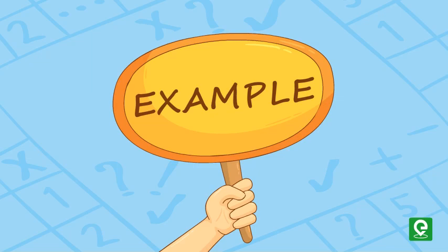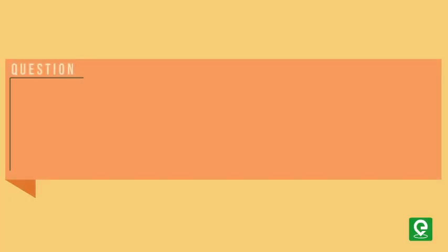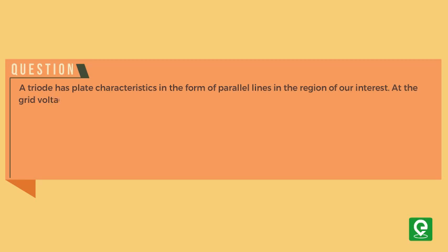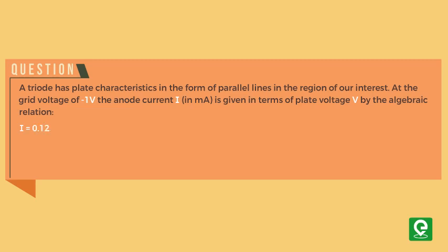Let's solve an example to understand the problems based on triodes. Question: A triode has plate characteristics in the form of parallel lines in the region of our interest. At the grid voltage of -1 volt, the anode current (in mA) is given in terms of plate voltage V by the algebraic relation I = 0.125V - 7.5.